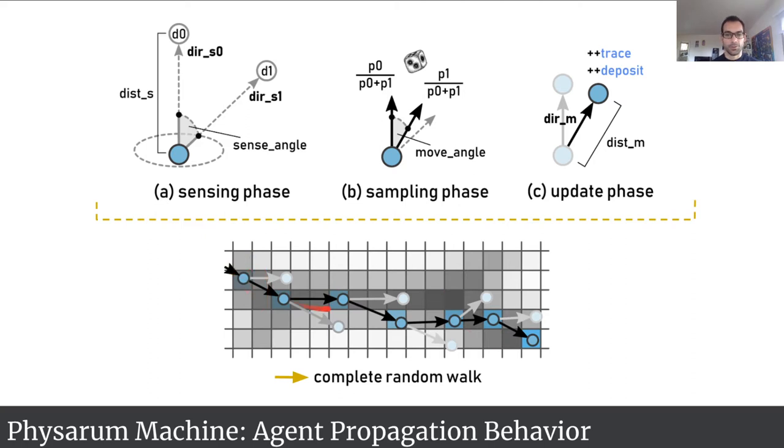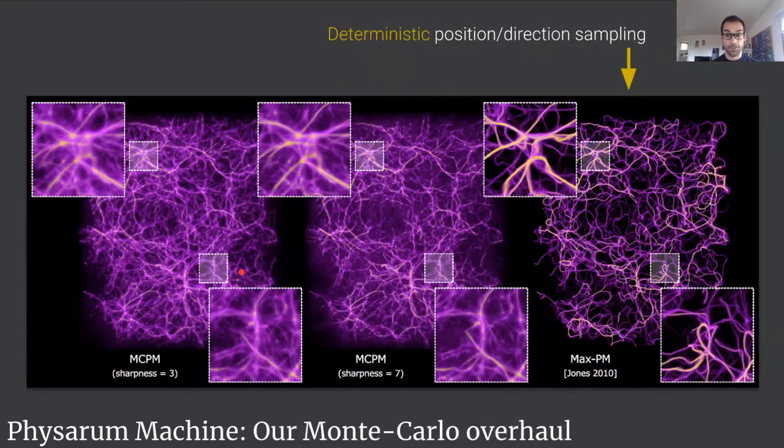This is just a single agent, but superimposing millions of these agents actually gives you a three-dimensional density field which we interpret as the reconstruction of the cosmic web. Here is an example of that.